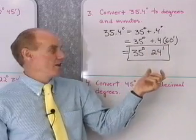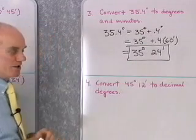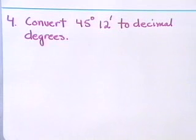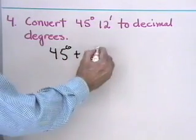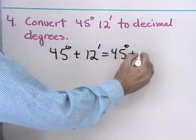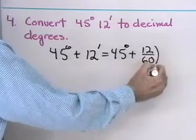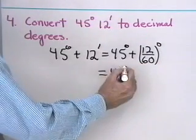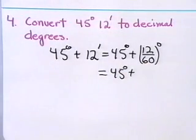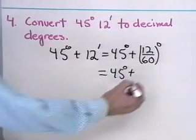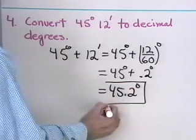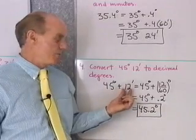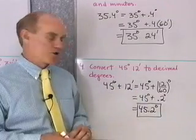Let's go in the other direction: take 45 degrees 12 minutes and change it into decimal degrees. This is 45 degrees plus 12 minutes, which is the same as 45 degrees plus 12/60 of a degree. 12 divided by 60 equals 0.2 degrees, so this becomes 45.2 degrees when we convert from degrees and minutes into decimal degrees.